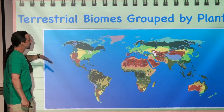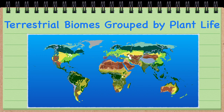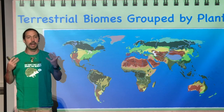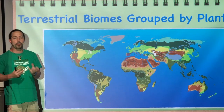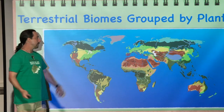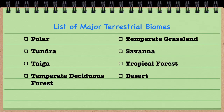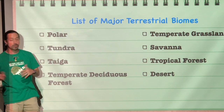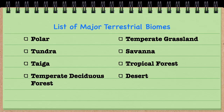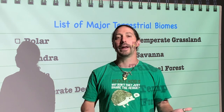Terrestrial biomes are generally grouped by the plant life that is the dominant species in that area — that is the way we generally look at biomes. Here is a list of some of the main biomes: polar, tundra, taiga, temperate deciduous forest, temperate grassland, savanna, tropical forest, and desert. We're going to go through each of these different biomes, explaining a few key features that they each might have.